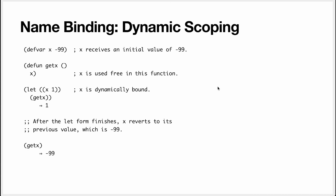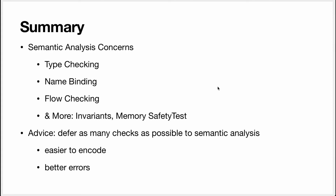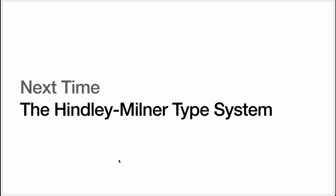This was a short video to introduce the concept of semantic analysis. The most common things we do are type checking, name binding, and flow checking. We can also do much more — checking for invariants, post-conditions, and memory safety. My advice: when you write your language, defer as many checks as possible to semantic analysis. Don't check too much in the parser, because that makes for bad errors and pollutes your grammar. Next time, we'll talk about a formal type system — specifically the most popular one, the Hindley-Milner type system, which is used as the basis for type checking in OCaml and ML. Until next time, take care.